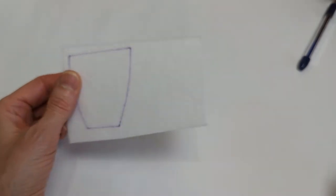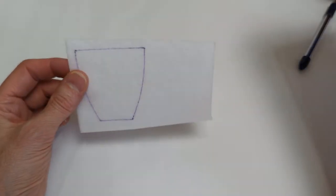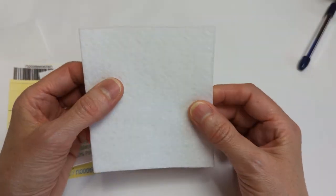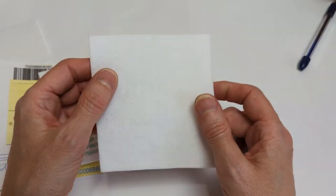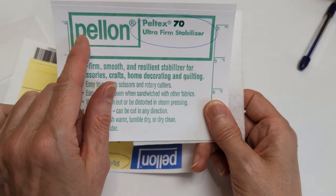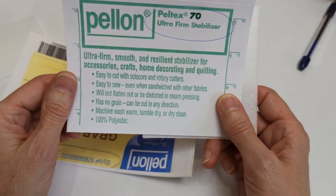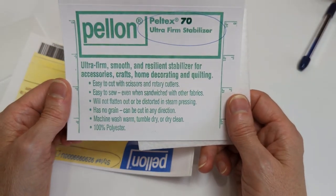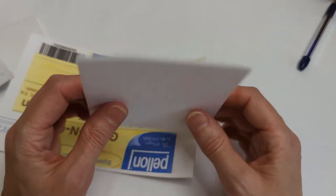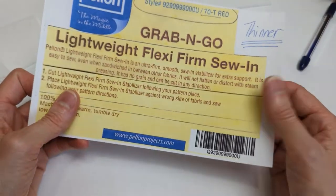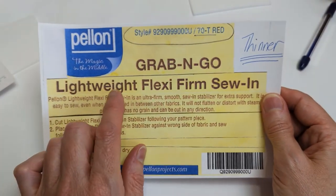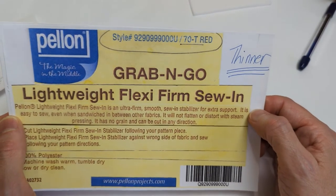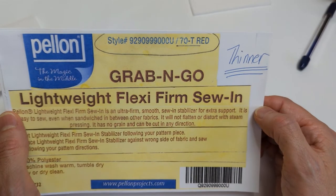I use the word pellon because that's the brand name, but really it's a white sew-in stabilizer that's about between one and two millimeters thick. It's pellon Peltex 70 ultra firm stabilizer. It has no grain, it's washable, it's absolutely my favorite and it's what this pattern was designed to use. Occasionally I will use the pellon 70T lightweight flexi firm sew-in, also washable, and I use that on some of the smaller bowls and just ease it to fit.